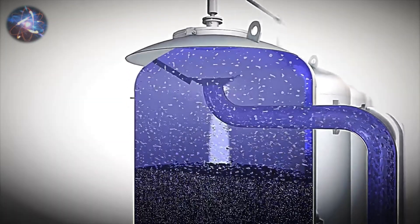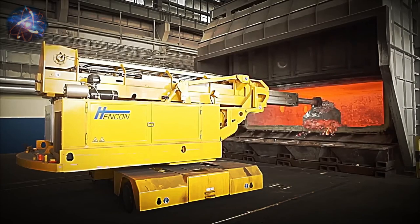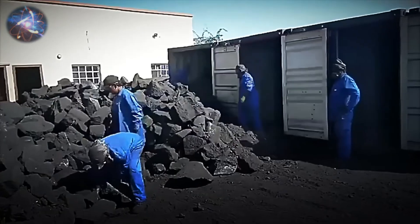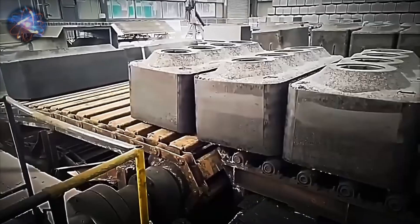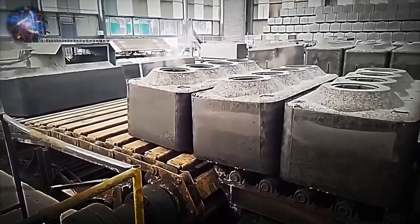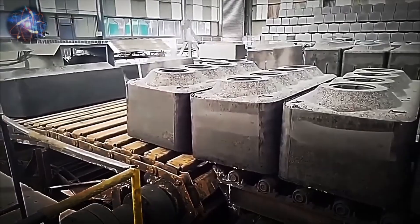During this processing phase, impurities such as iron and silicon do not react with the caustic soda, making their removal easier. However, it is important to note that this process generates large amounts of waste, known as red mud, which must be managed properly to avoid environmental contamination.